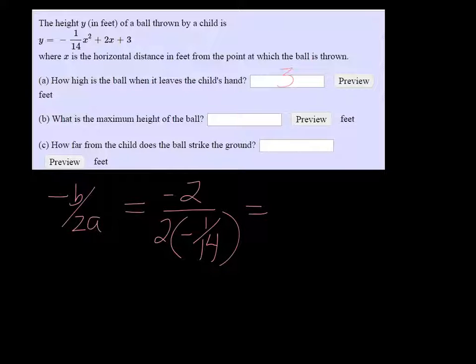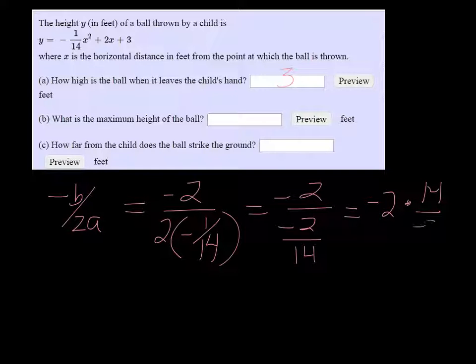And we want to simplify that, so negative 2 over, it's going to be negative 2 over 14, which is negative 2 times 14 over negative 2. Negative 2s cancel, and we just get positive 14.